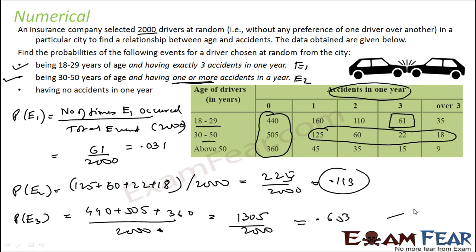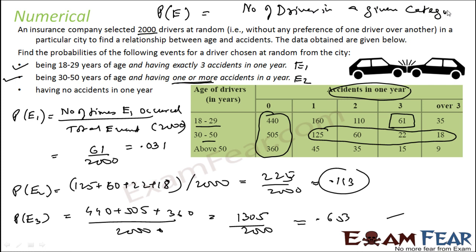So in this case, we first find the number of drivers belonging to the category we are looking for, divided by total number of drivers. Probability of any event equals number of drivers in a given category we are looking for by total number of drivers.